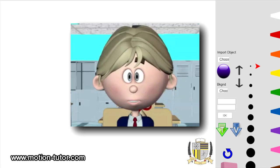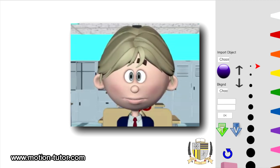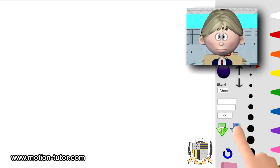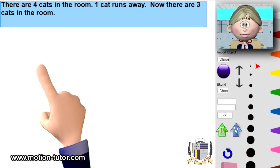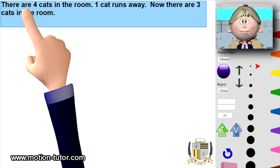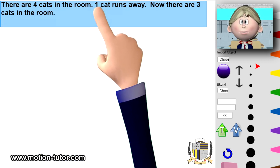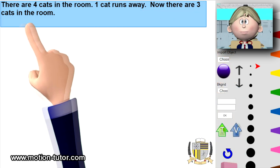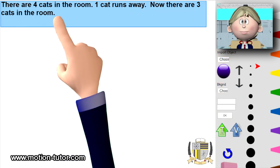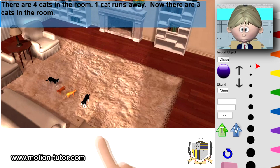Okay, so let's now get to this lesson. We see there are four cats in the room. One cat runs away. Now there are three cats in the room. So here is an example of this.